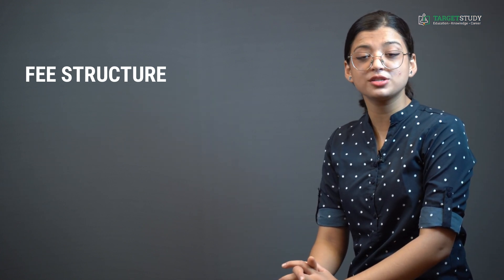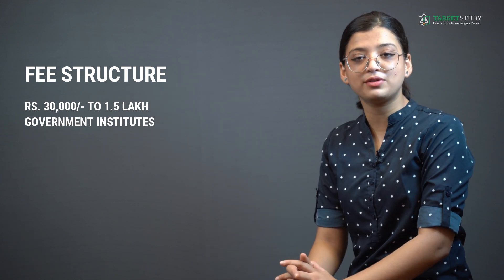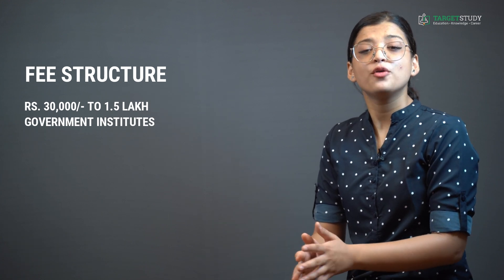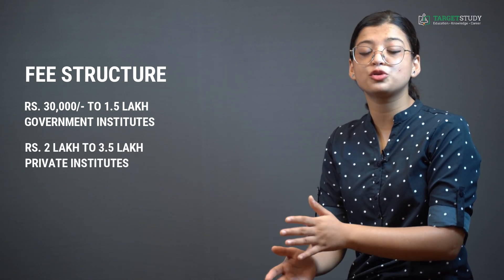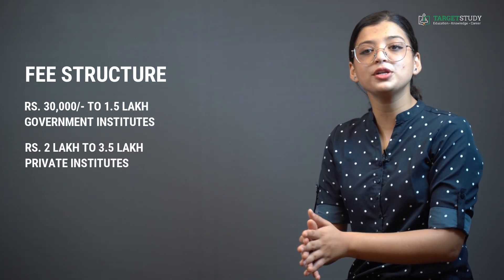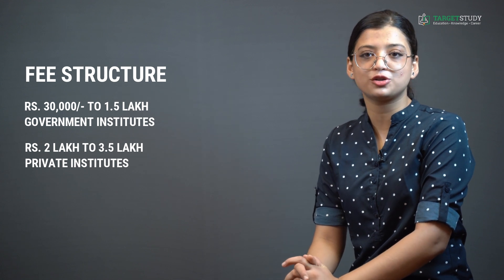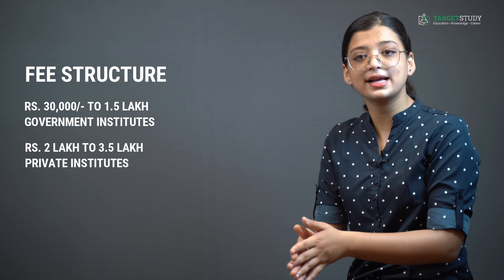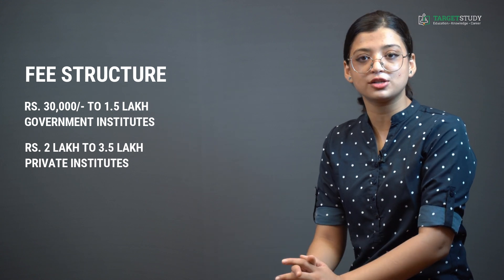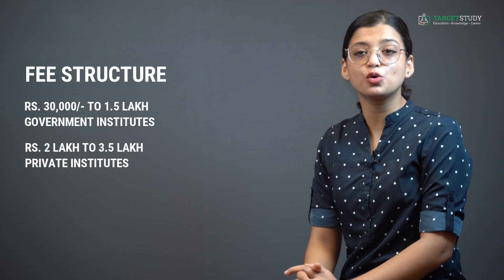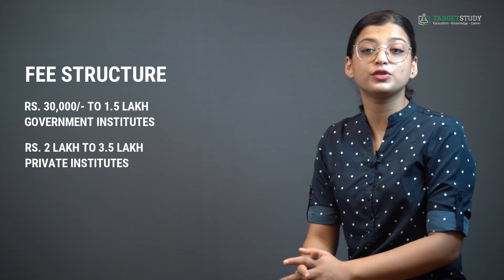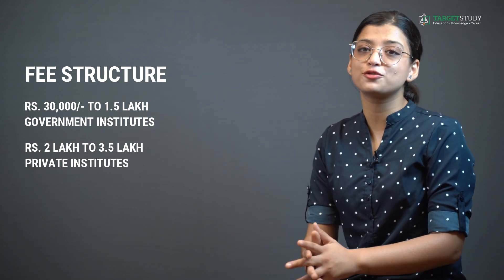Now you would like to know about the fee structure of B.Sc Computer Science course. The average course fee for B.Sc Computer Science course ranging from Rs 30,000 to 1.5 lakhs in Government Institutes. Whereas for the same course, the fee can vary between Rs 2 lakhs to 3.5 lakhs in Reputed Private B.Sc Computer Science Institutes. This fee may vary slightly depending upon the gender and the reputation of the Institute you are going to join. So it is always advisable to go through the latest fee structure of the Institute before thinking of joining it.